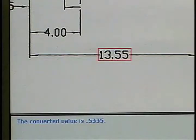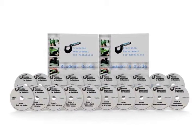That's the wrong answer. The converted value is five hundred and thirty-three thousandths and five tenths. Ten lessons make up the PMM, Precision Measurement for Machinists, course.